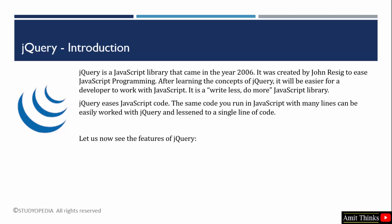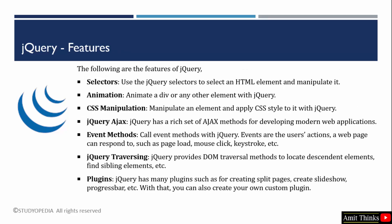Let us see some features of jQuery. First, it includes the concept of selectors. A selector is used to select an HTML element and manipulate it. There are various types of jQuery selectors — we will see them later. These include the jQuery element selector, class selector, and ID selector.